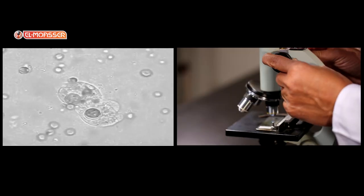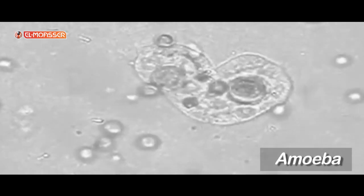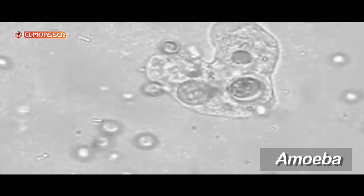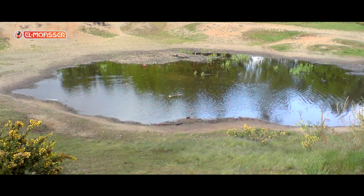are some cells that move by pseudopodia and others that move by cilia. The cells that move by pseudopodia are amoeba, and they live in ponds.